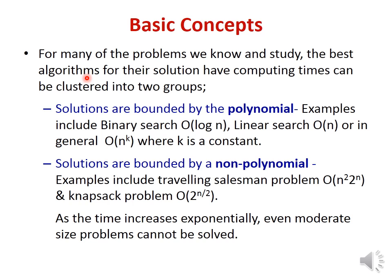It is observed that for many problems we have studied, the best algorithms have computing time falling into two categories. The first category is polynomial time complexity — for example, binary search is O(log n), linear search is O(n), and in general O(n²), O(n³), or O(n^k). Even as n increases, the solution is obtained in an acceptable amount of time.